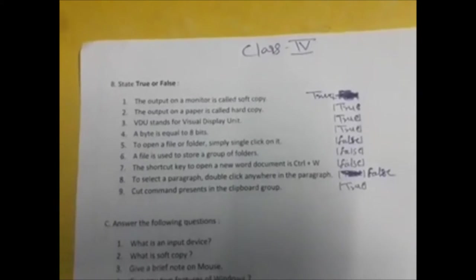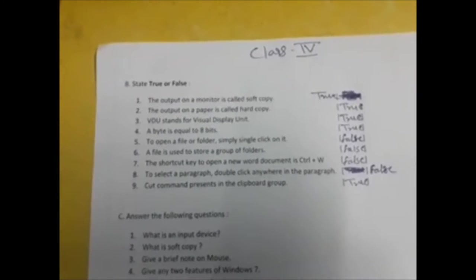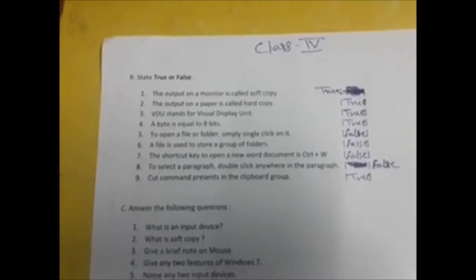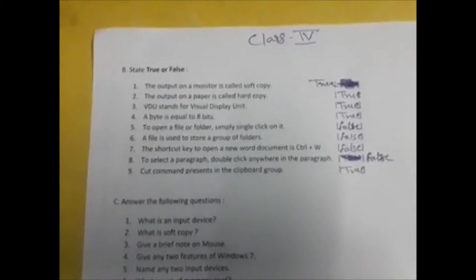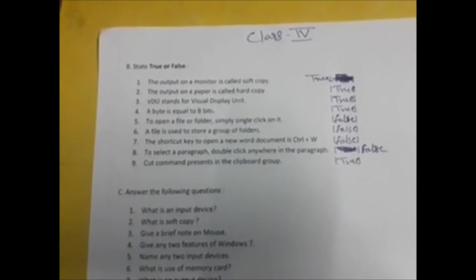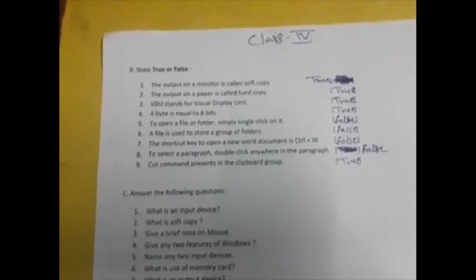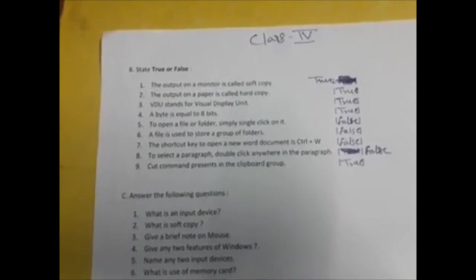Second is the output on the paper is called hard copy. Yes, that is hard copy because it is printed out from your printer, we can touch and feel it. Next, VDU stands for Visual Display Unit. It is true because VDU is a Video Display Unit, it is a monitor of your computer.